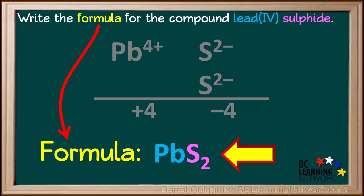We've now answered the question. The formula for lead four sulfide is PbS2. Notice there are no charges or roman numerals in the final formula.